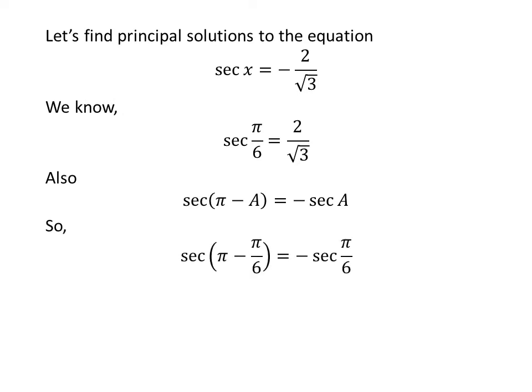Applying the above identity, secant of pi minus pi upon 6 is equal to minus secant of pi upon 6. Since pi minus pi upon 6 equals 5 times pi upon 6, and plugging in the value of secant of pi upon 6, we get secant of 5 times pi upon 6 is equal to minus 2 upon square root of 3.